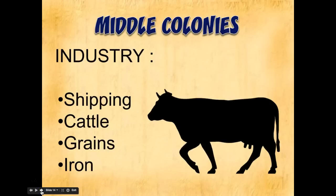In terms of industry in the middle colonies, they're doing a lot with grains as we just talked about. They also have a little more cattle and do some shipping — there are some major port cities here. They're also going to be doing some mining, like iron ore and things like that coming out of the ground. So mining and iron is also going to be a key industry in the middle colonies.